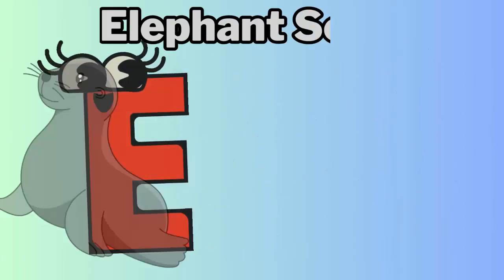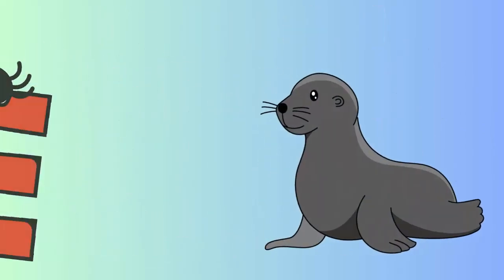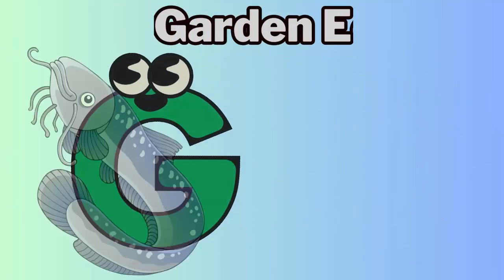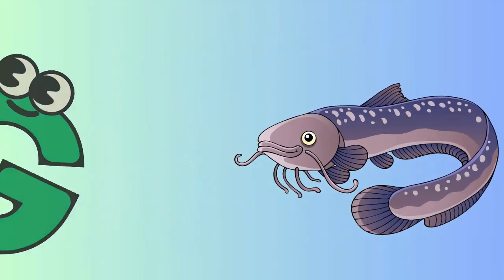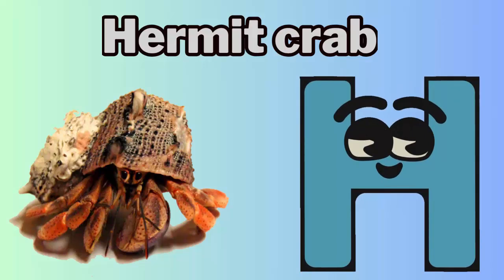E - E for Elephant Seal. F - F for Flounder. G - G for Garden Eel. H - H for Hummock Crab.